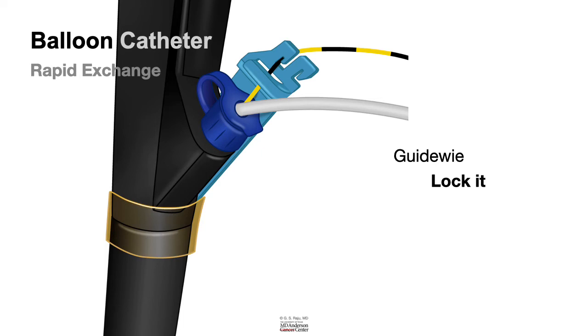Once the procedure is done, you want to remove the balloon catheter. Pull the catheter out, and when it is coming closer to the biopsy cap, you unlock the guide wire and do a short exchange.